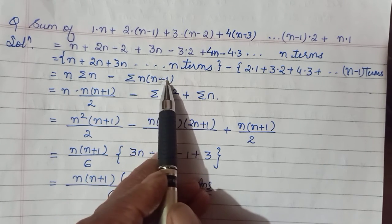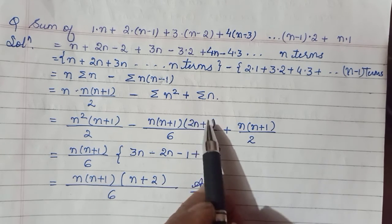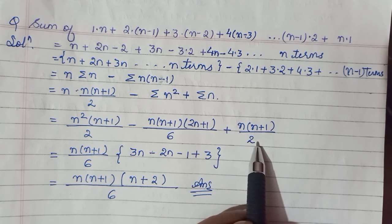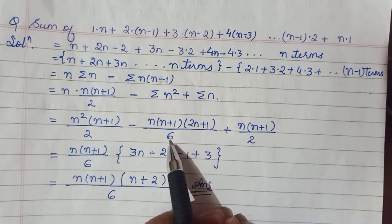Minus minus will make it plus, and n·1, Σ1 is n. Ab mein formulas laga do. Σn we know is n(n+1)/2. Σn² is n(n+1)(2n+1)/6.